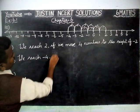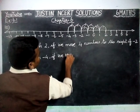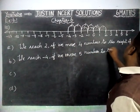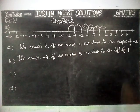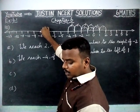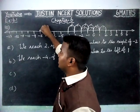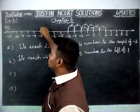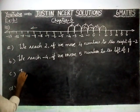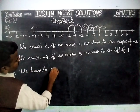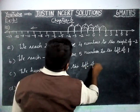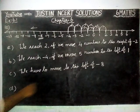We reach minus 4 if we move 5 numbers to the left of 1. Next question is: if we are at minus 8 on the number line, in which direction should we move to reach minus 13? We are at minus 8 and we have to reach minus 13, so we have to move to the left of minus 8.